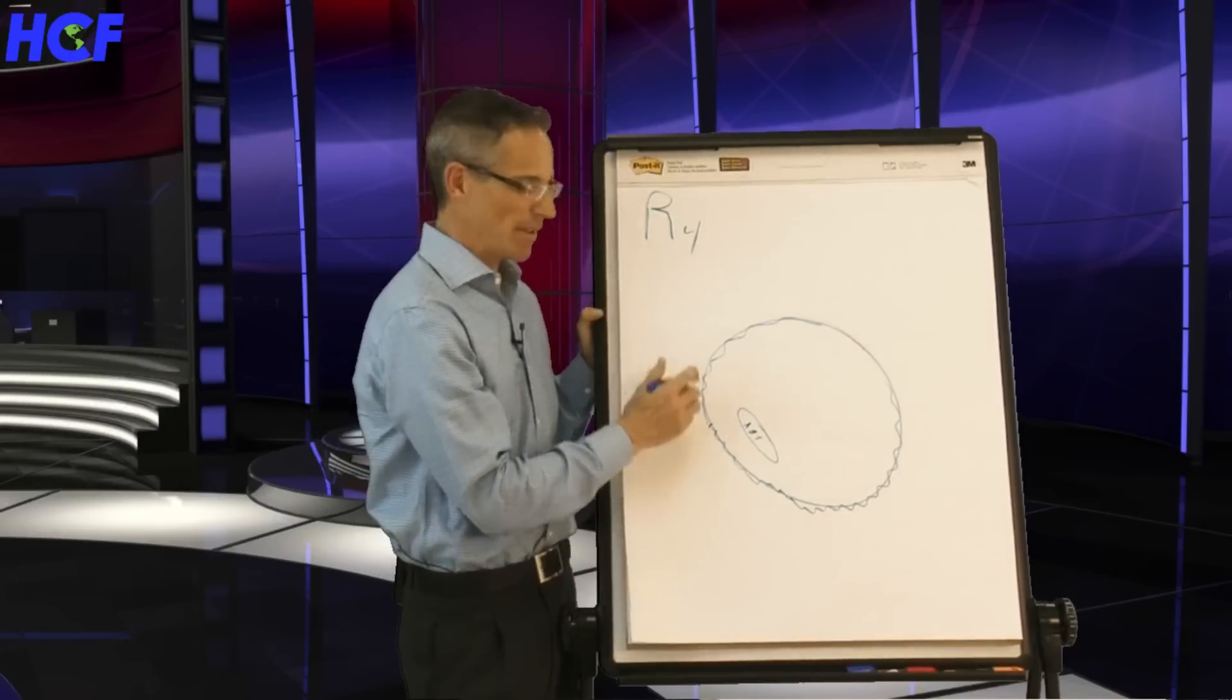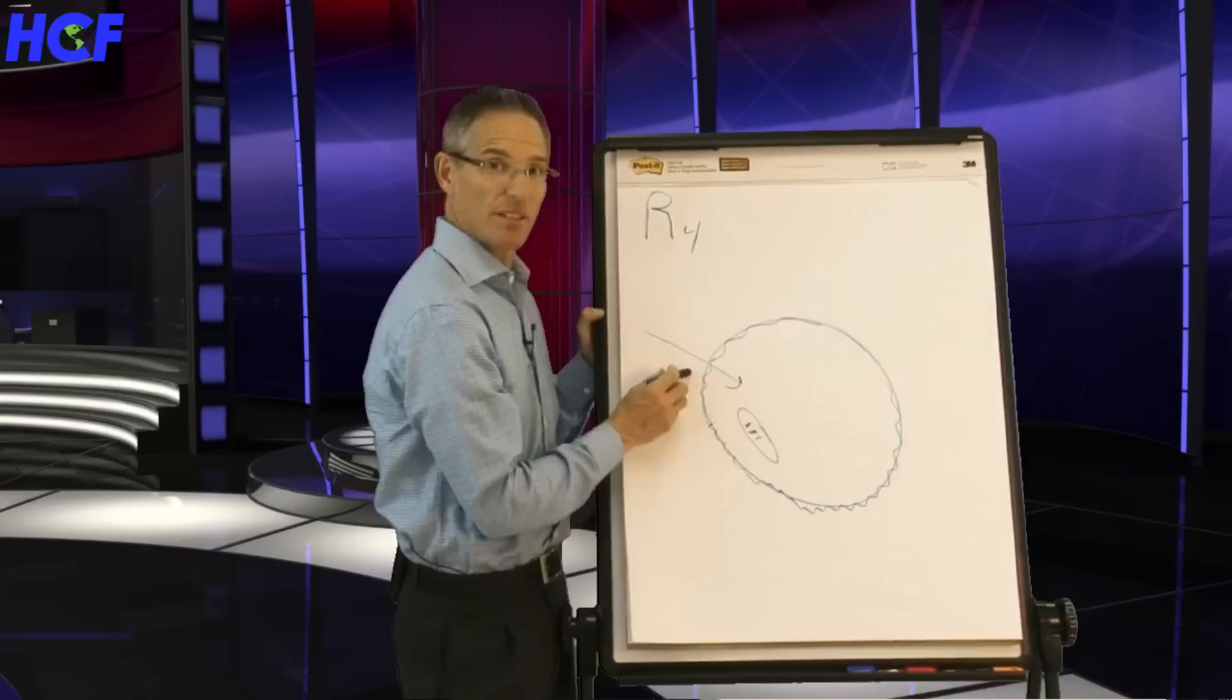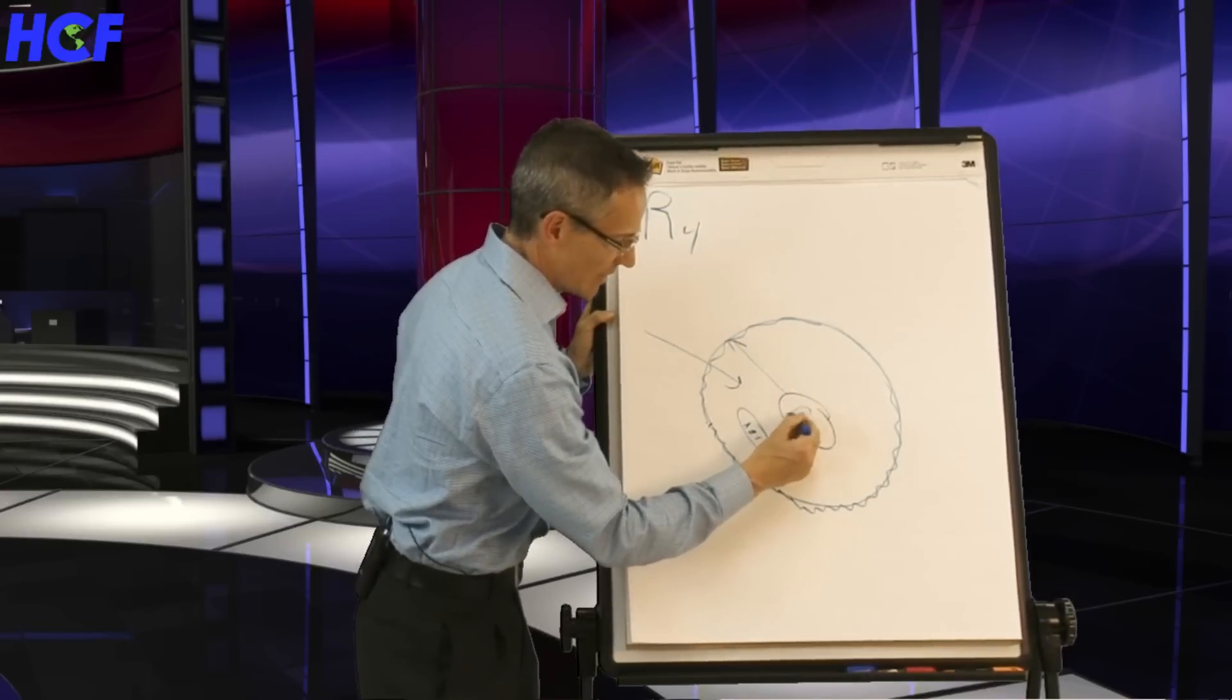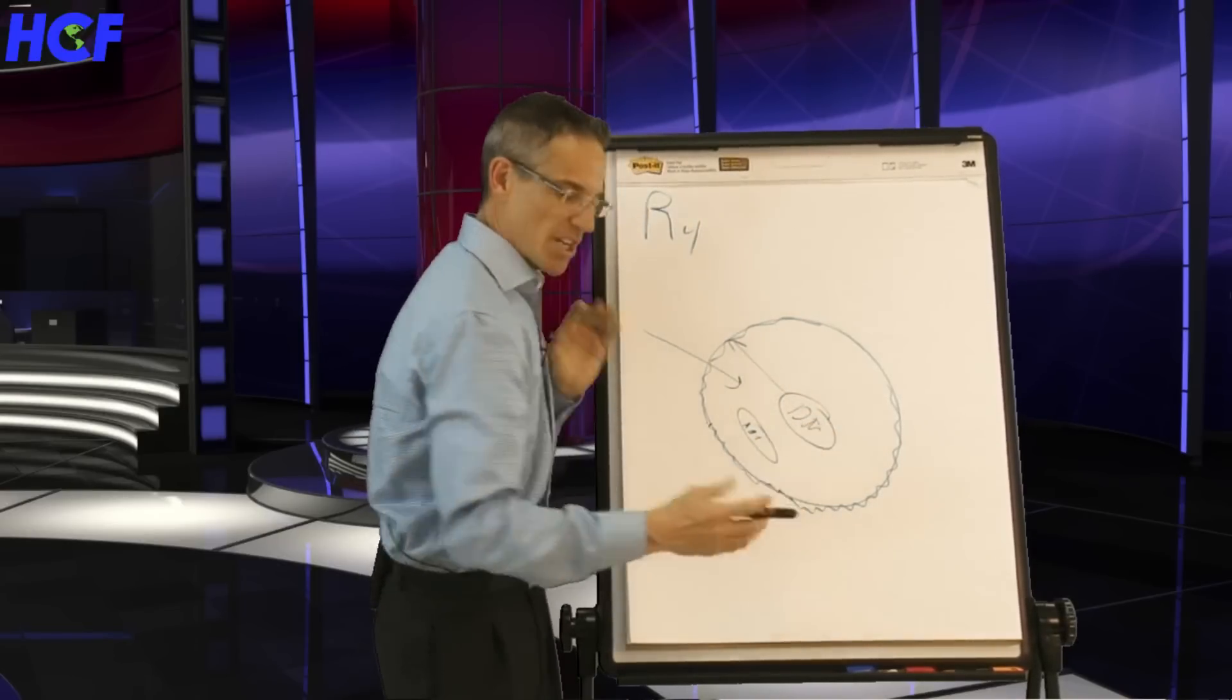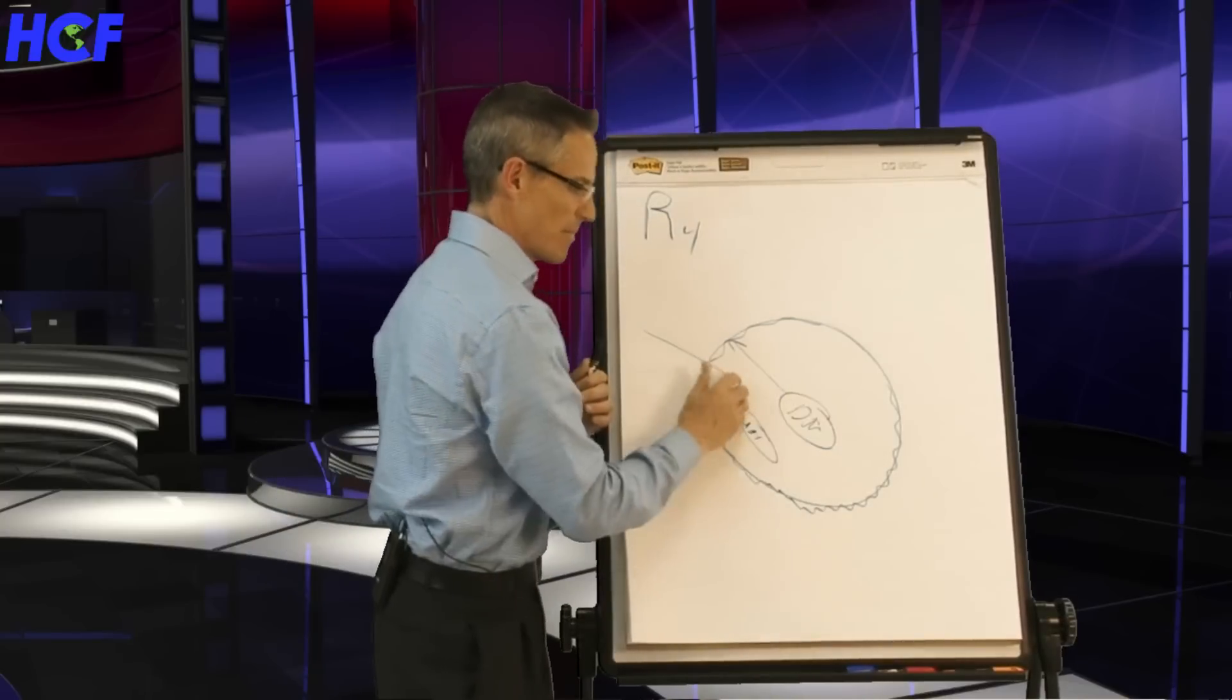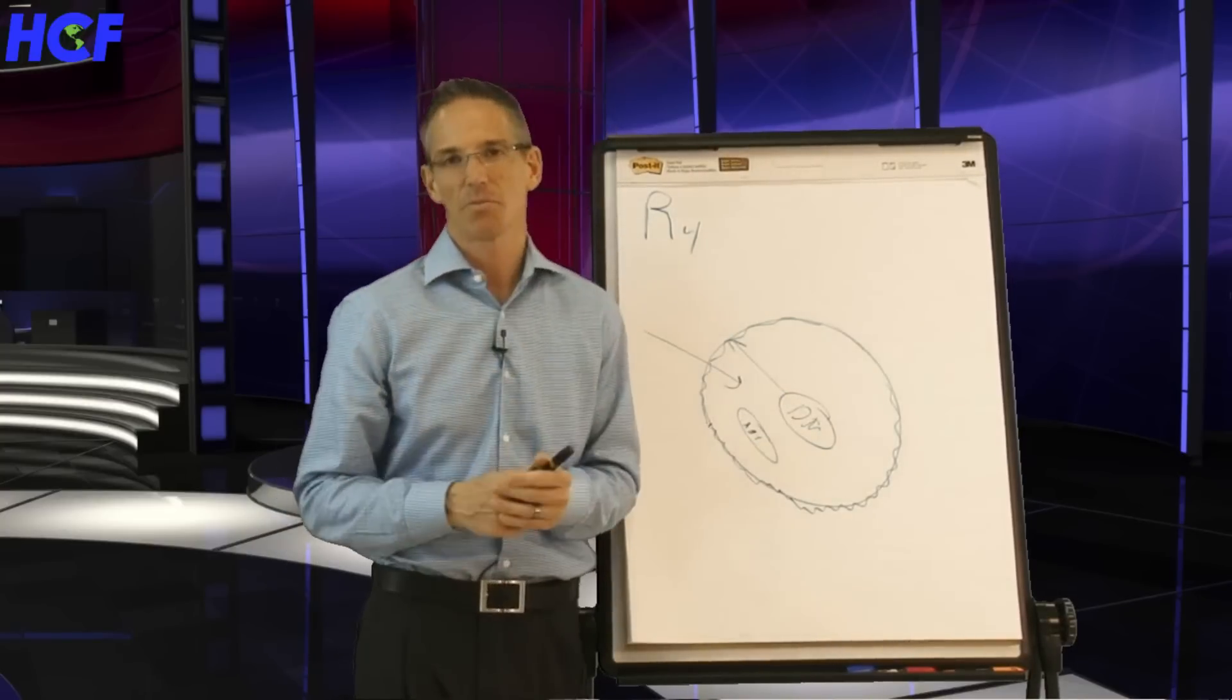When this membrane becomes inflamed, now we can't get the good stuff in, we can't get the toxins out. We start triggering our DNA. We start getting epigenetic triggers, and now we're getting diseases of our genetic weakness. I talked about fixing the cell membrane and how that can actually change gene expression.